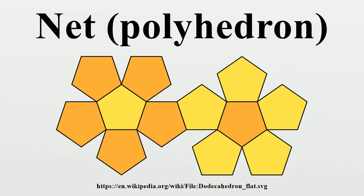However, the polyhedron formed in this way may have different faces than the ones specified as part of the net. Some of the net polygons may have folds across them, and some of the edges between net polygons may remain unfolded. Additionally, the same net may have multiple valid gluing patterns, leading to different folded polyhedra.